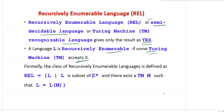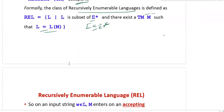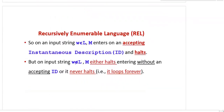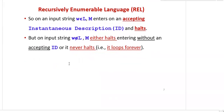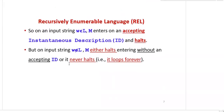Formally, the class of recursively enumerable languages is defined as: REL = { L such that L is a subset of Σ* and there exists a Turing machine M such that L = L(M) }. There exists a Turing machine which accepts that language — this is called a recursively enumerable language, also called a semi-decidable language.